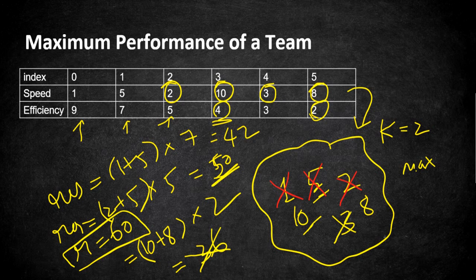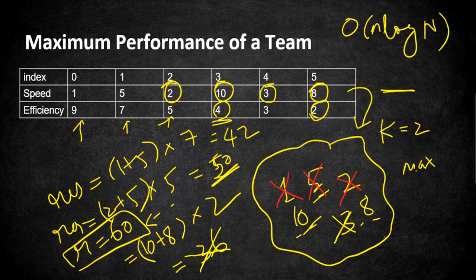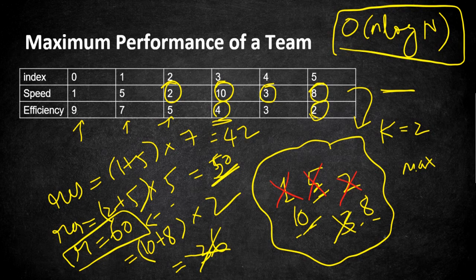We reached the end of iteration with no other employees left. We formed a team of two employees with speeds 10 and 8 and our result is 60, which is the maximum performance achievable. This solution takes O(n log n) time: we sort the array once, and we push and pop values to the heap, which overall takes 2n log n time. Ignoring constants, the time complexity is O(n log n).